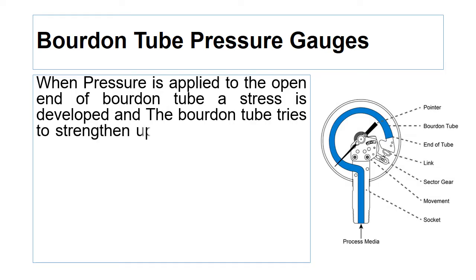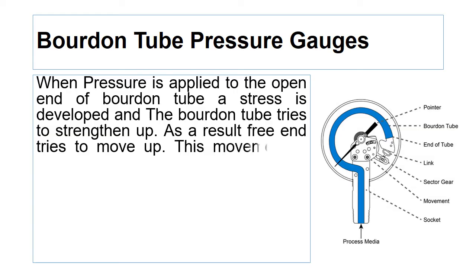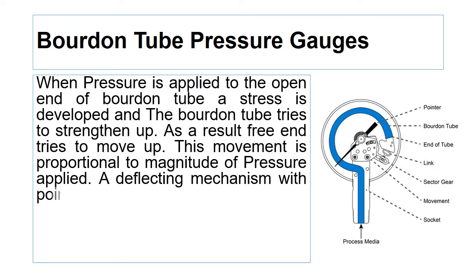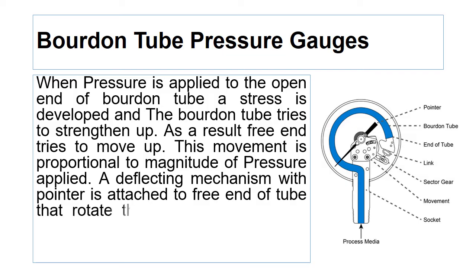As a result, the free end tries to move up. This movement is proportional to the magnitude of pressure applied. A deflecting mechanism with a pointer is attached to the free end of the tube, which rotates the pointer on a calibrated scale. The pointer indicates the reading of the pressure to be measured.